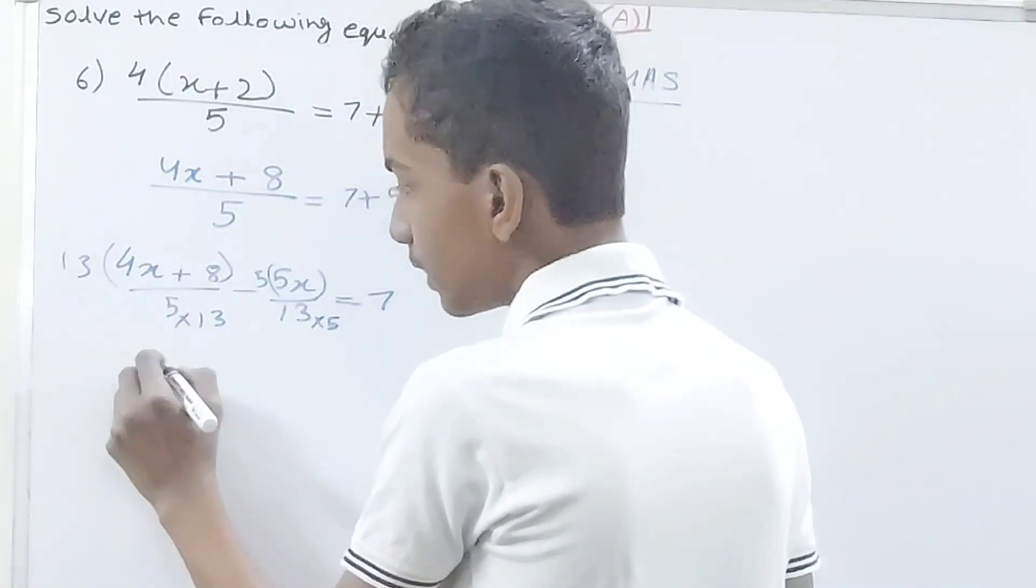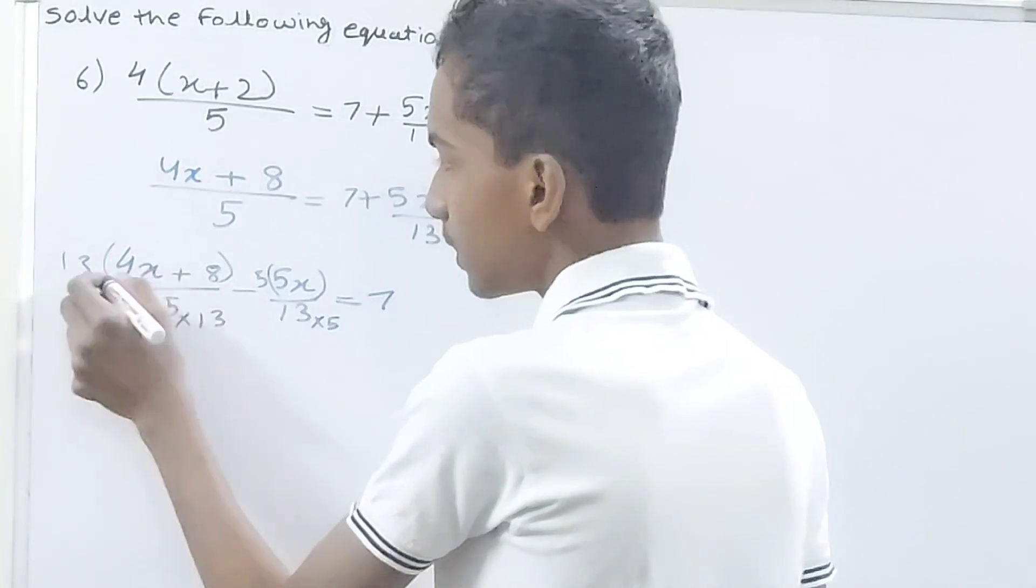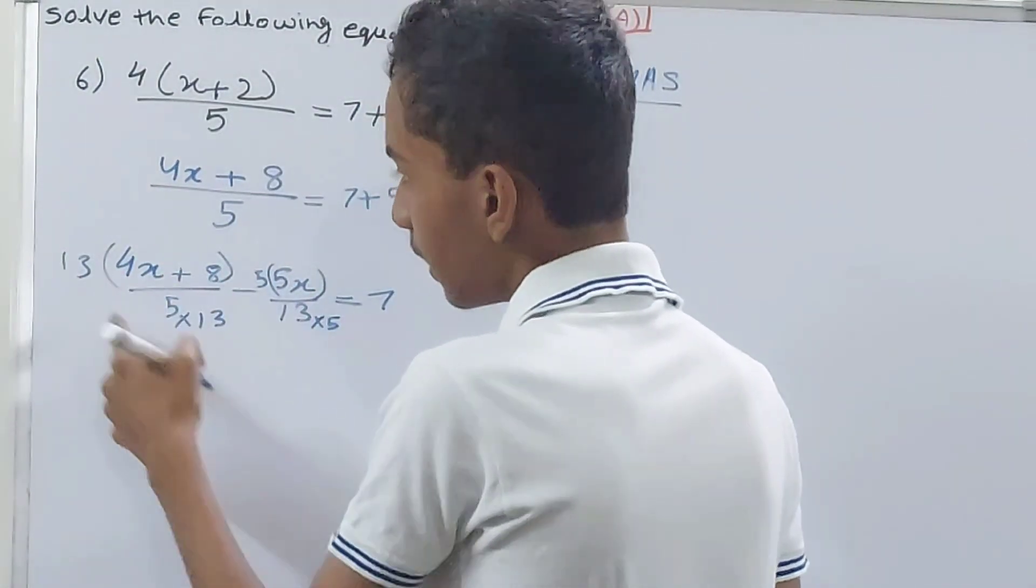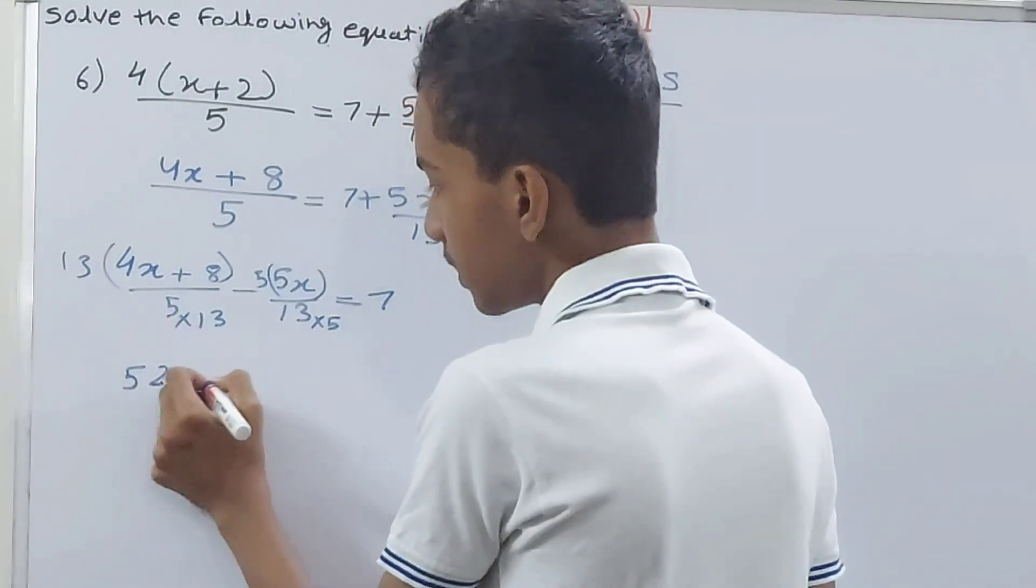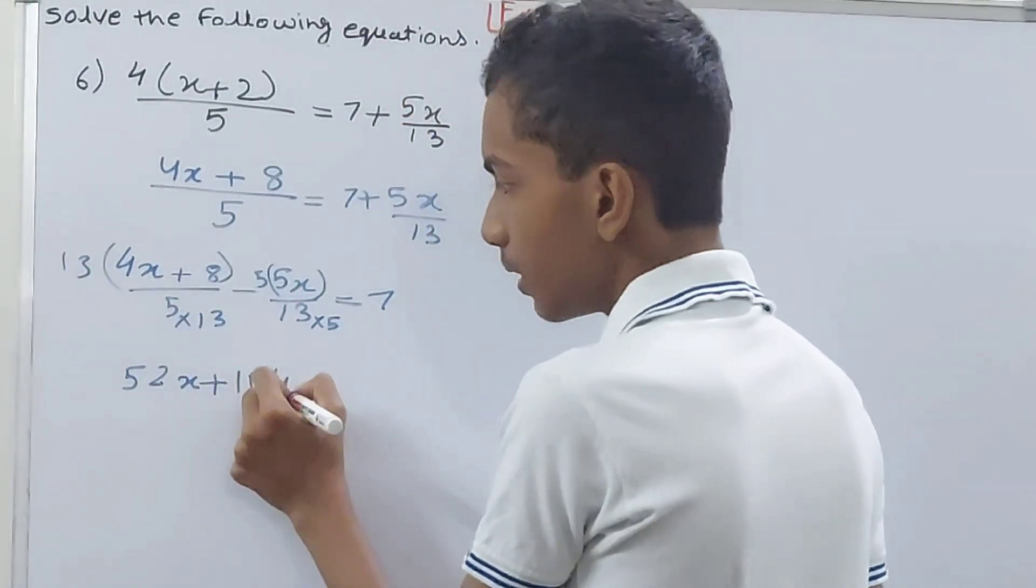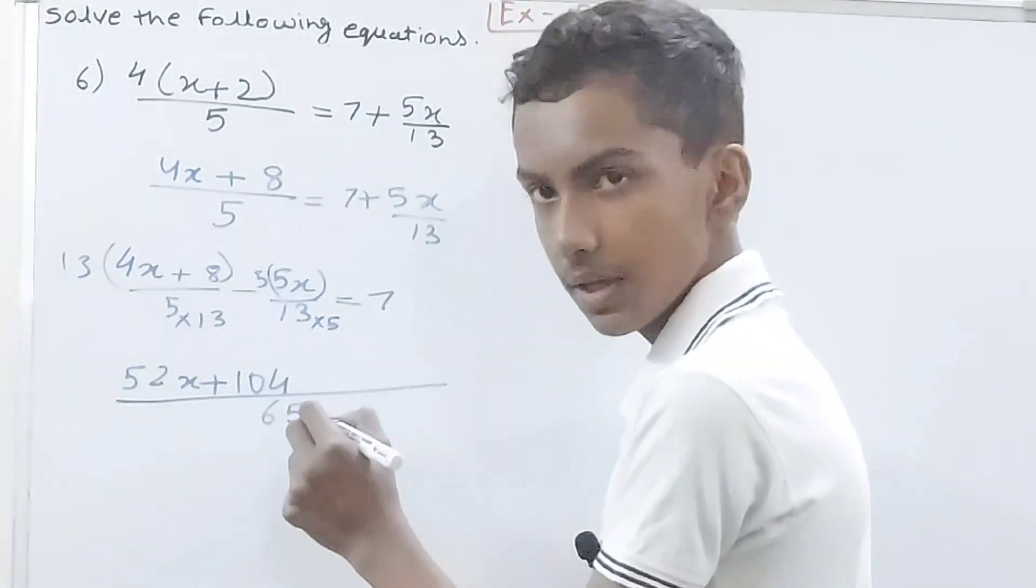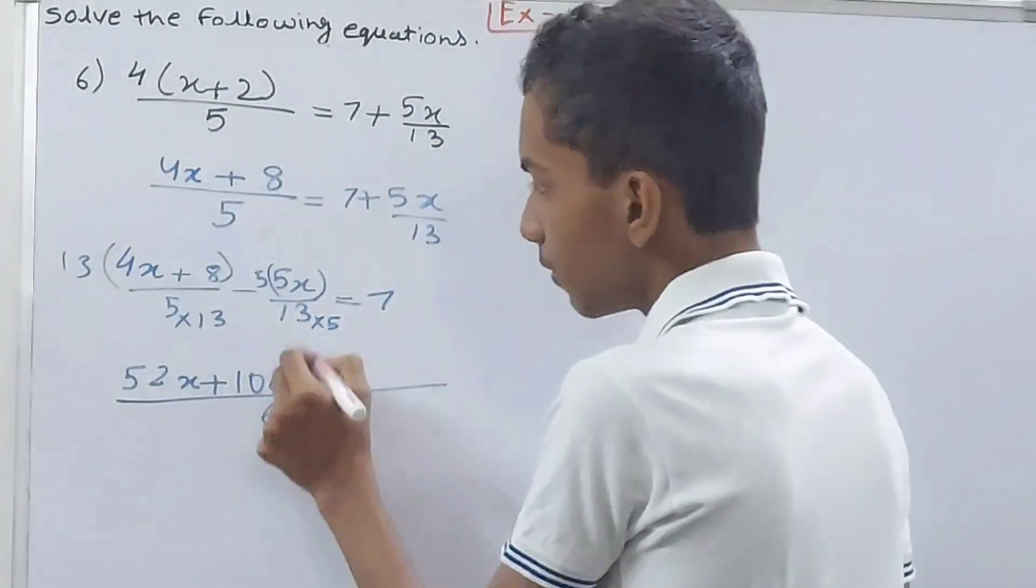You will have, see, 13 into 4 that's your 52, and what else? X. So 4 times 13 is 52, so 52x plus 13 into 8 is 104 upon this entire thing will be 65, and minus 5 into 5 is 25x equals to 7.